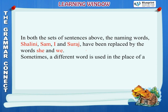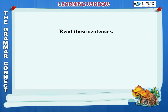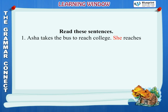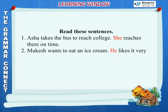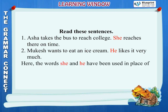Read these sentences. 1. Asha takes the bus to reach college. She reaches there on time. 2. Mukesh wants to eat an ice cream. He likes it very much. The words She and He have been used in place of Asha and Mukesh.